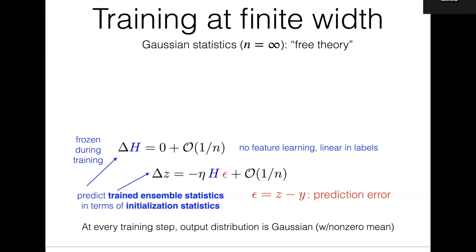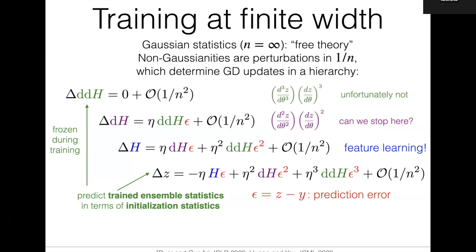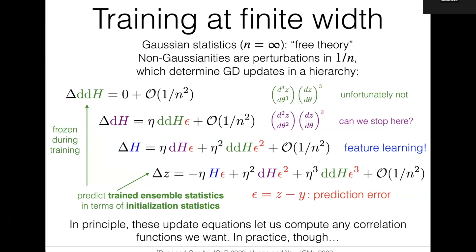Things get more complicated at finite width. There's a whole hierarchy of objects, one of which is frozen during training. You can compute things perturbatively in one over the width. The NTK does update during training at finite width, so you start to learn features from your data. Unfortunately, this hierarchy only closes after six derivatives of the network — a frustrating technical aspect of the MLP architecture. All this has been worked out in a series of papers, especially the book by Ben Roberts, who has been an IAS member.